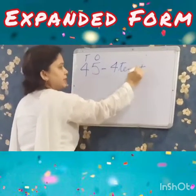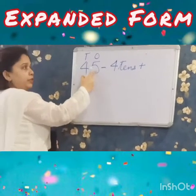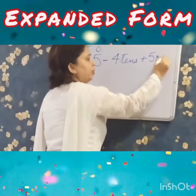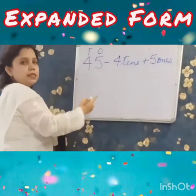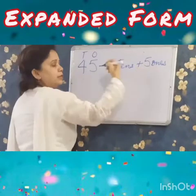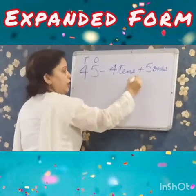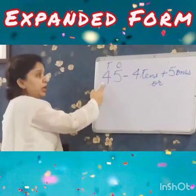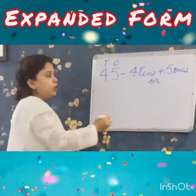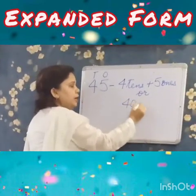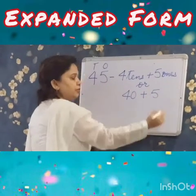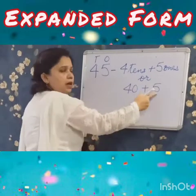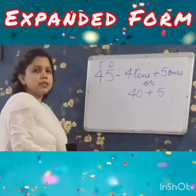Plus, we write place value of 5: 5 1's. So in expanded form, 45 is 4 10's plus 5 1's. Or you can also write in numbers — 4 10's are 40, 5 1's are 5, so 40 plus 5.